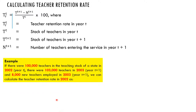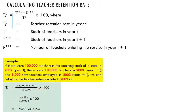Now let's look at an example. If there were 100,000 teachers in the teaching stock of a state in 2000 — remember, this 2000 is the base year, that is year t — and there were 103,000 teachers in 2001, that is year t plus 1, the following year, and 8,000 new teachers were employed in 2001, that is the same year t plus 1, we can calculate the teacher's retention rate. How do you do this? Now bring in the formula.